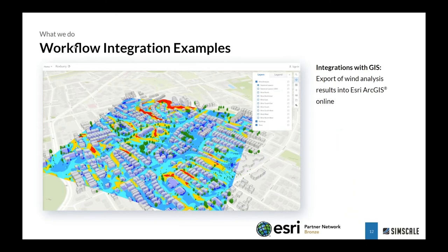Here are two quick examples of how the API has been used by customers and partners. The first is a city model from Boston where the data source was in a GIS model in ArcGIS Online. The geometry was exported to SimScale, we ran the pedestrian wind comfort analysis on eight different wind directions, and the resulting pedestrian comfort as well as individual directional wind results were uploaded back to ArcGIS Online. This enabled a large audience to view the local wind effects around a new development inside the GIS tool — not using SimScale — but directly where they need to see results and make informed design decisions.